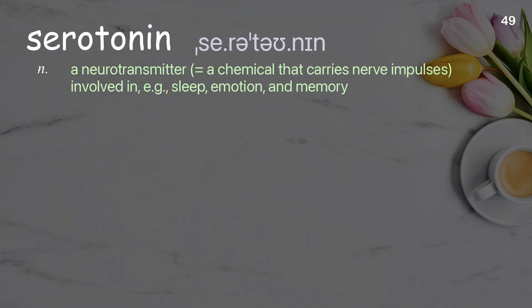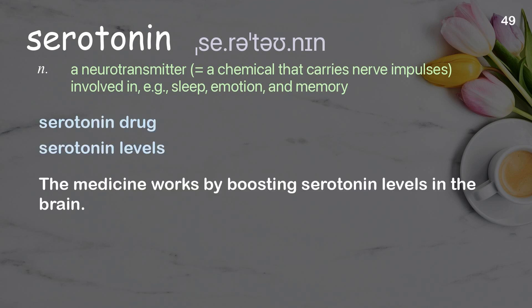Serotonin: A neurotransmitter — a chemical that carries nerve impulses — involved in sleep, emotion, and memory. Examples: Serotonin drug. Serotonin levels. The medicine works by boosting serotonin levels in the brain.